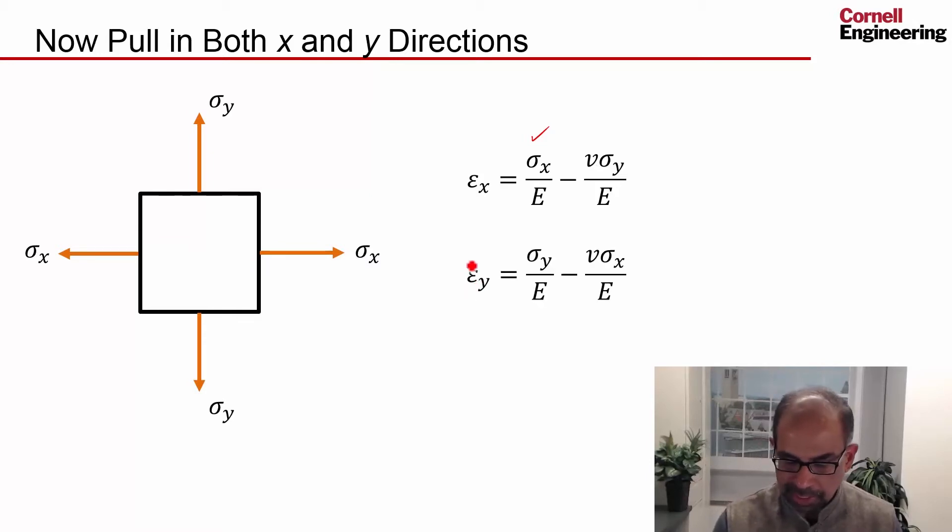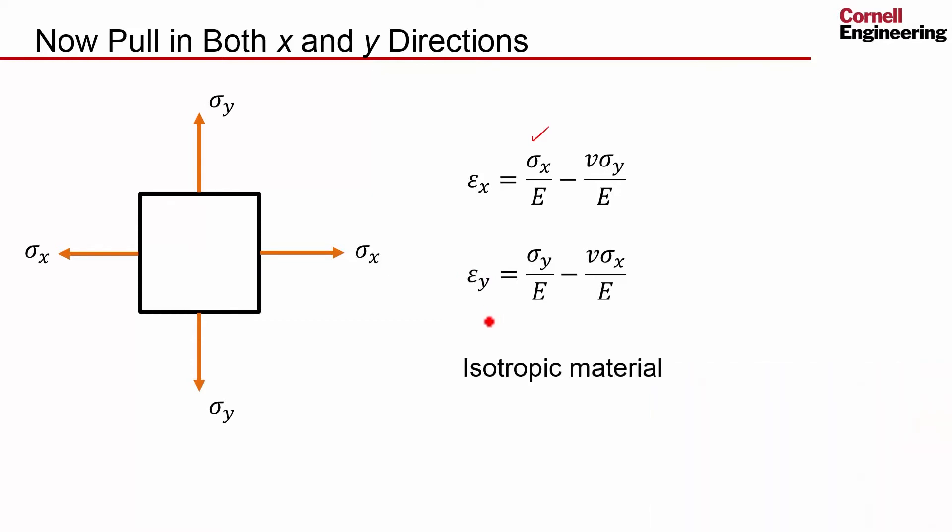Similarly, I can write for the strain in the Y direction. And the assumption embedded within these expressions is that the material is isotropic. That is, that it behaves the same in all directions. So I can add up the effect of sigma X and sigma Y in this way.